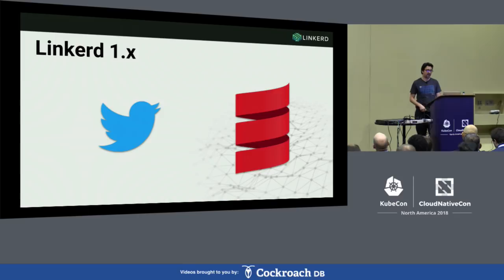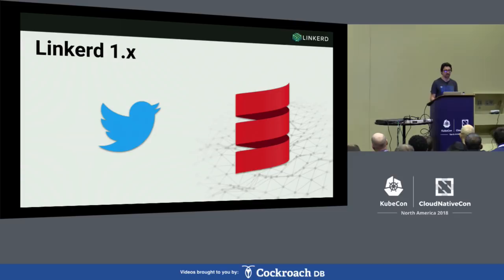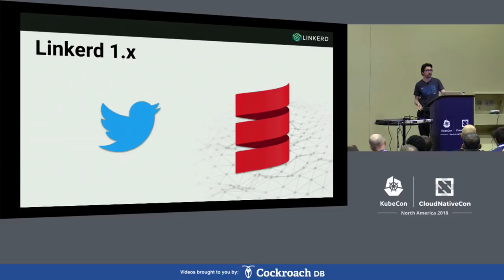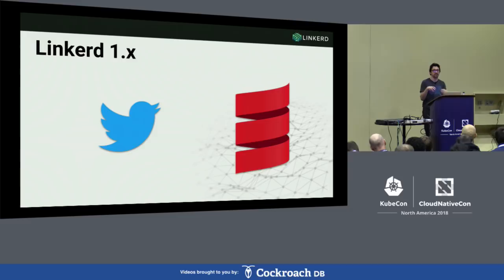Finagle was a Scala library which is still used in probably every microservice at Twitter today. It's gained pretty good acceptance across the community. The drawback was that since it was a Scala library, you needed to be writing a Scala application to take advantage of this. So that was the inspiration for building Linkerd. What Linkerd 1.0 did is it took this Scala library and wrapped it into a proxy, so that any language, any framework — whether running locally, on Mesos, Kubernetes, or whatever — you could take advantage of this service mesh concept.